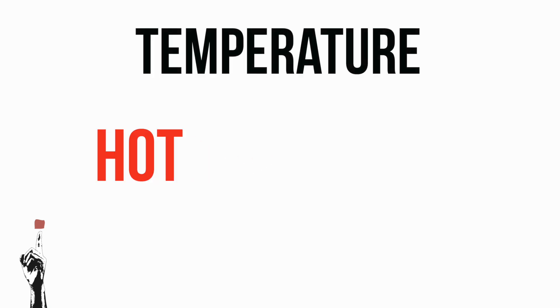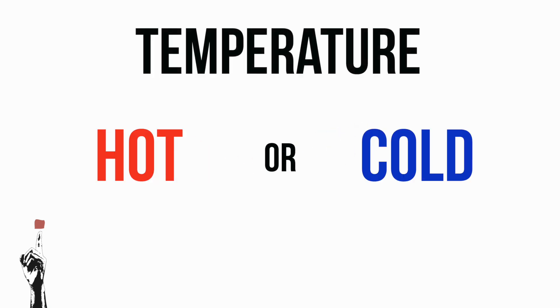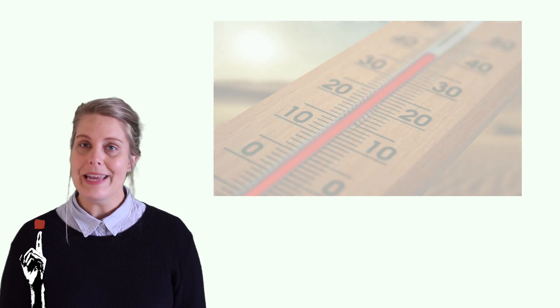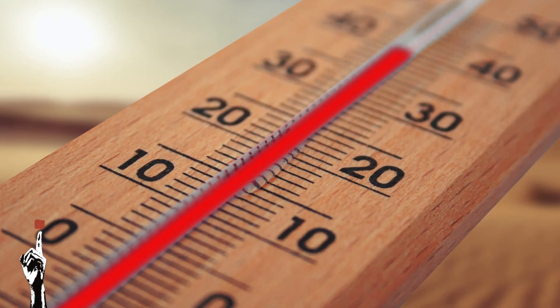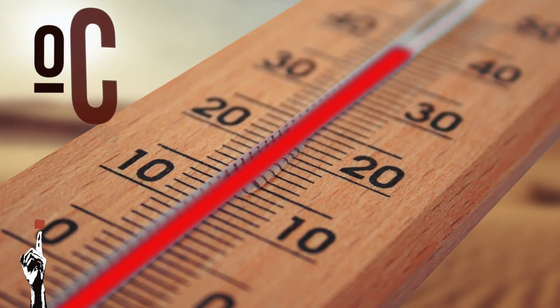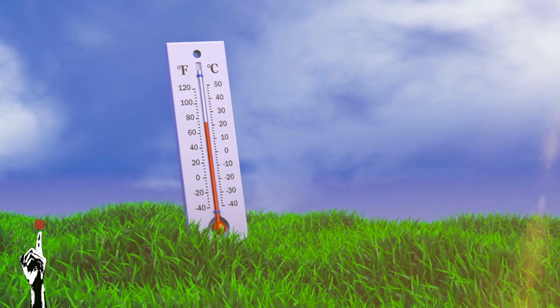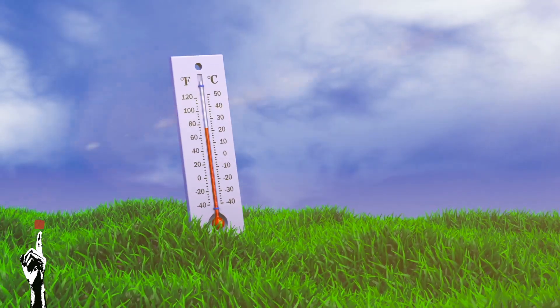Temperature is how hot or cold the actual air temperature is. We measure temperature using a thermometer and it is measured in degrees Celsius. When using a thermometer, the mercury inside heats up to the temperature of the person or the thing and is read off the numbers on the side.